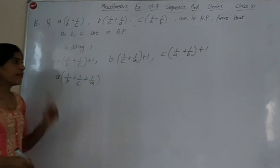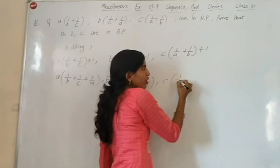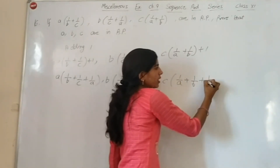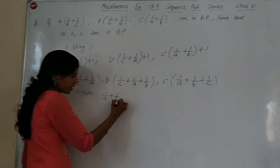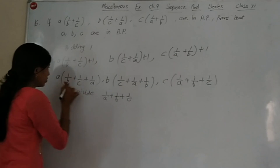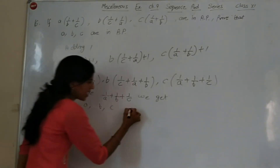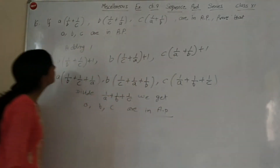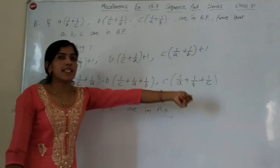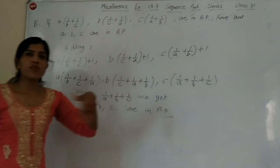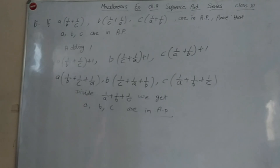Adding 1 to each term: (1/b + 1), (1/c + 1), (1/a + 1). This gives (b+1)/b, (c+1)/c, (a+1)/a. Since adding the same constant to all terms of an AP preserves the AP, and then dividing each term by the same value — dividing term by term — we get a, b, c are in AP. That was question number 16.